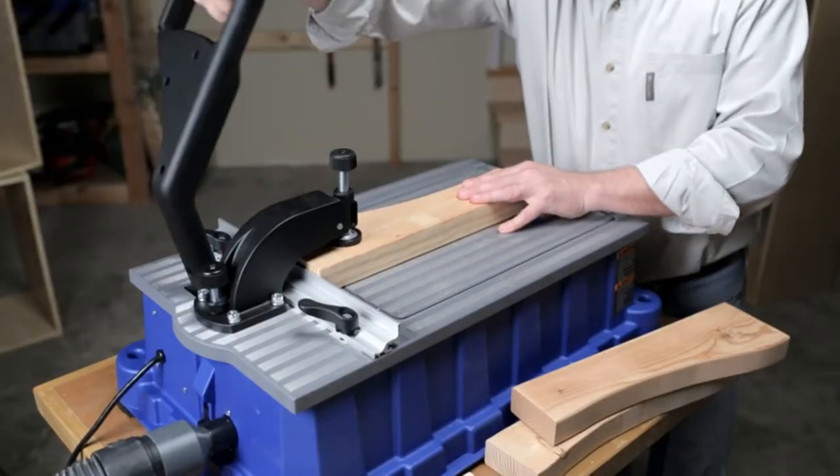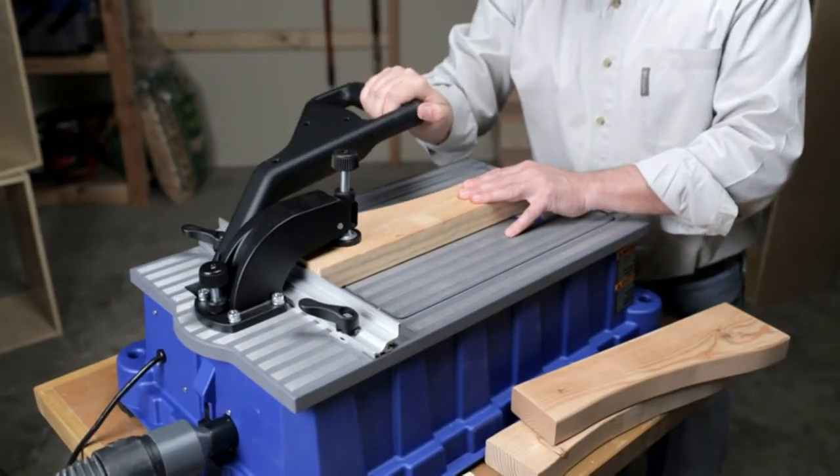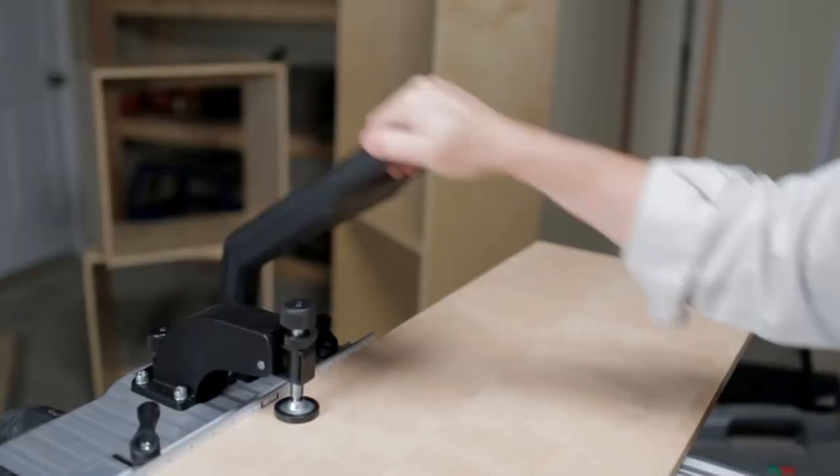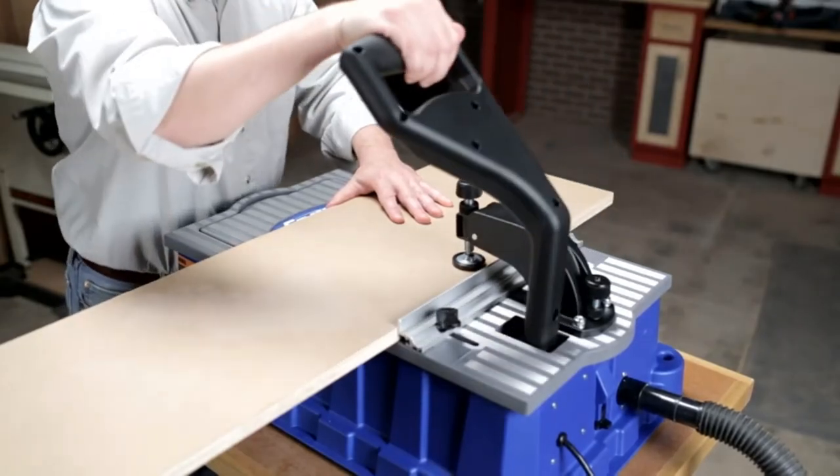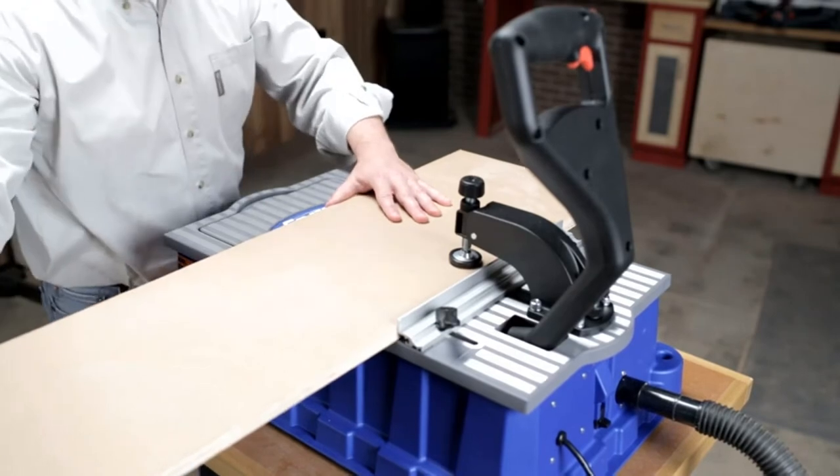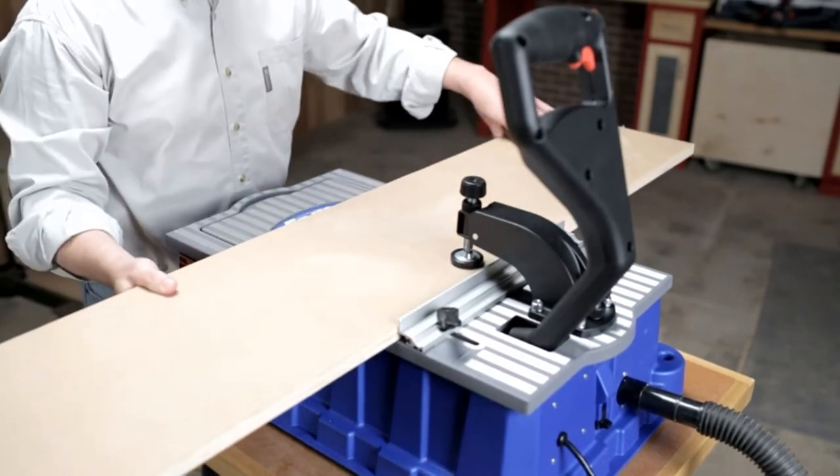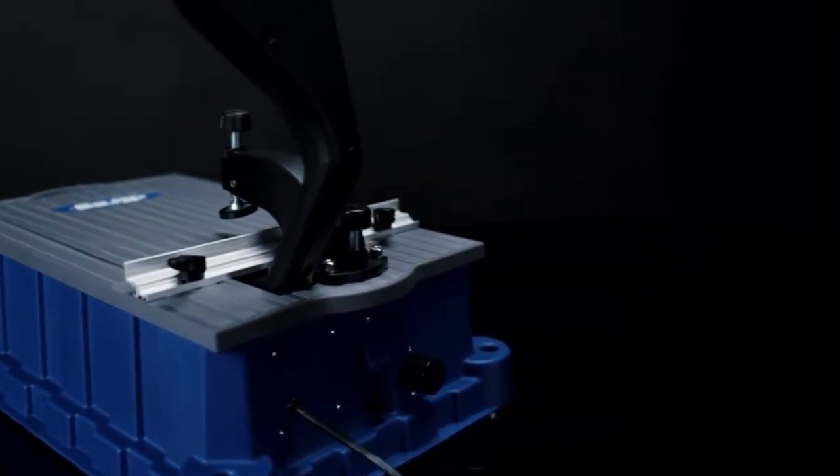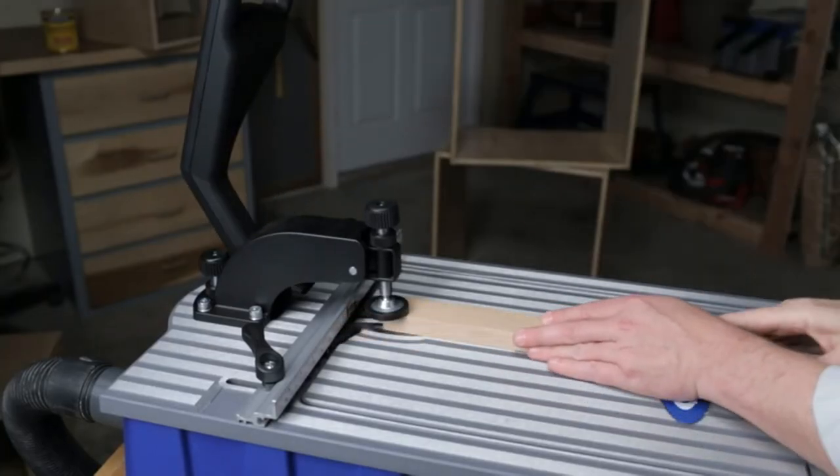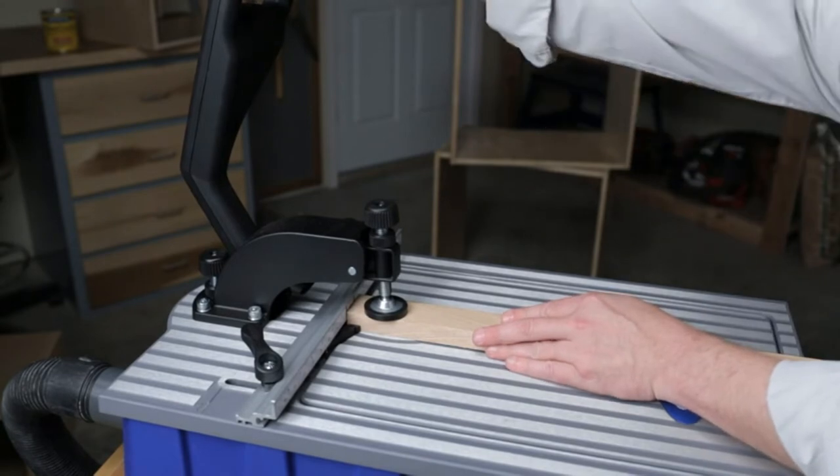Plus, the new Foreman pocket hole machine is built with the same quality and features of its predecessor item number DB110, but costs less than half the price. Users will immediately appreciate all of the great features the upgraded Foreman has to offer.